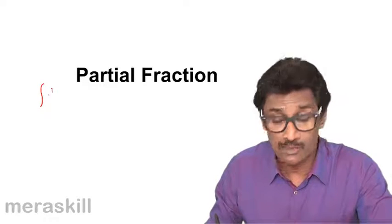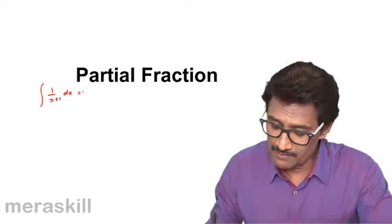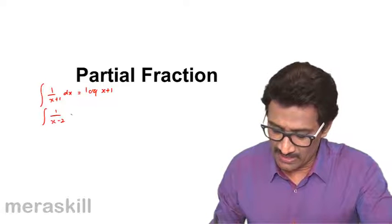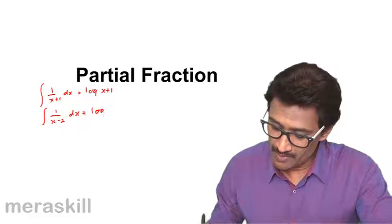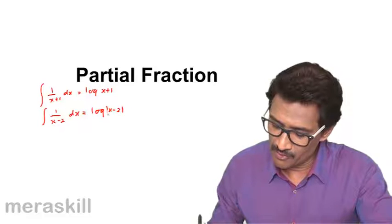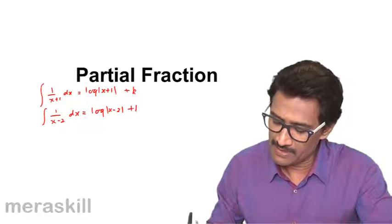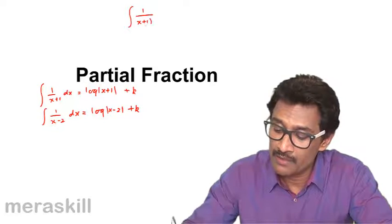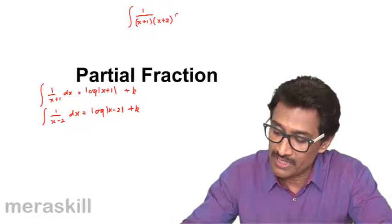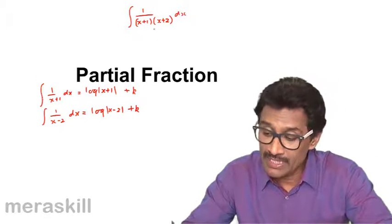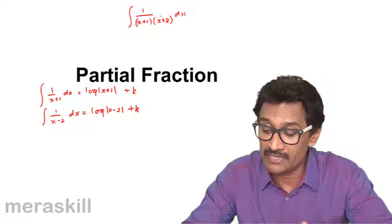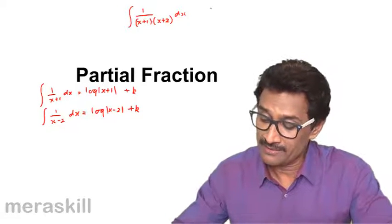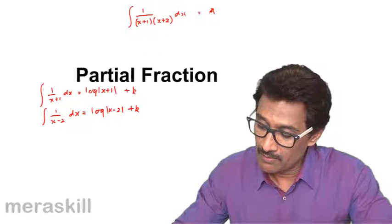We have done cases where 1/(x+1) dx is log|x+1|, and 1/(x-2) dx is equal to log|x-2| plus k. But suppose you have something like 1/[(x+1)(x+2)] dx — how do we do this? We need to first take this expression and write it as the sum of two fractions.